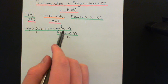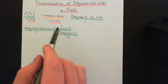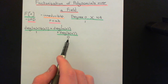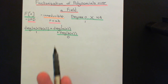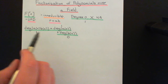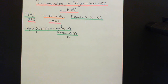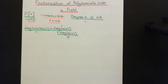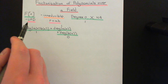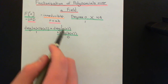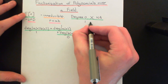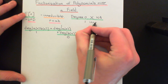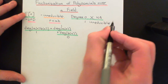A degree one polynomial, if it splits into a product of two elements, one must have been degree one and the other degree zero. If both were degree zero, you'd get a degree zero product; if both were degree one, you'd get degree two. The only way to get a degree one polynomial back is to multiply a degree one by a degree zero polynomial. But all degree zero polynomials are units, so all products involve a unit — showing that all degree one polynomials are irreducible.